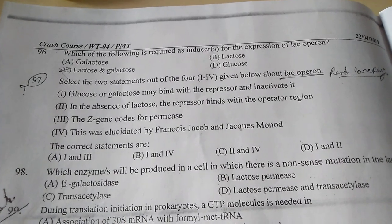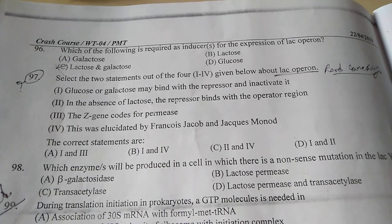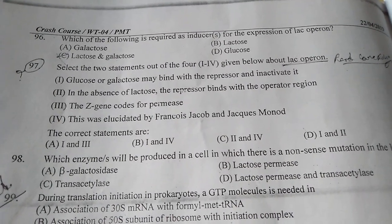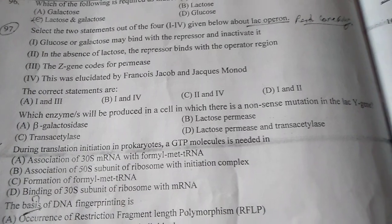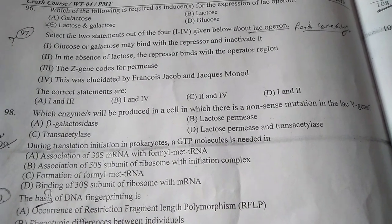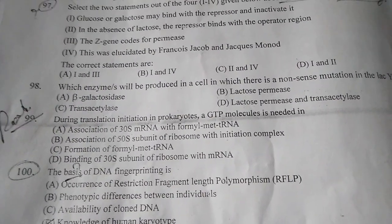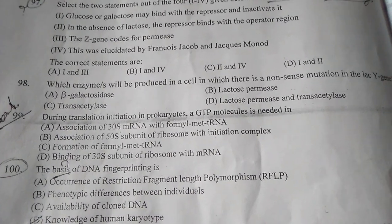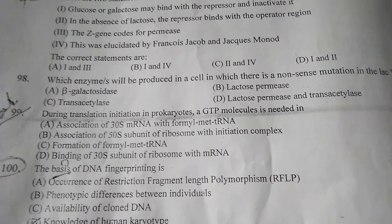Question number 97: Select the two statements out of the four given below about lac operon. We have four options and the correct answer is C — that means second and fourth. Question number 98: Which enzymes will be produced in a cell in which there is a nonsense mutation in the lac Y gene? The correct answer is A. Question number 99: During translation initiation in prokaryotes, a GTP molecule is needed in — the correct answer is A.